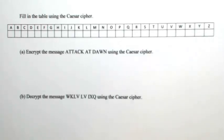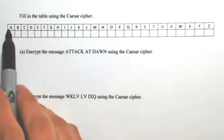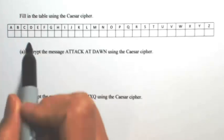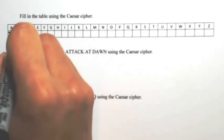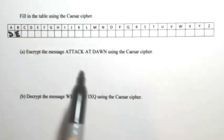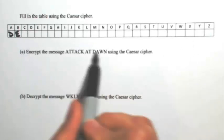Fill in the table using the Caesar cipher. The Caesar cipher is going to take each letter and move it to the right three letters. So an A would become a D, a B would become an E, and so on and so forth.